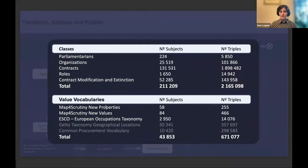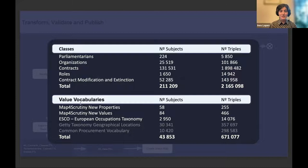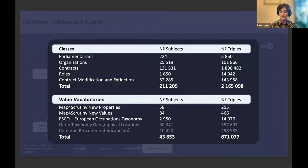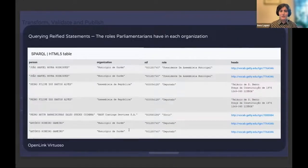After validation, everything that passed was uploaded to the triple store: all parliamentarians, organizations, contracts, roles, contract modifications and extinctions. Since the endpoint is not yet publicly accessible online, all vocabularies — new properties, new values, the European occupations taxonomy, and the reused taxonomies for geographical locations and common procurement vocabulary — were also uploaded to the local triple store instance.